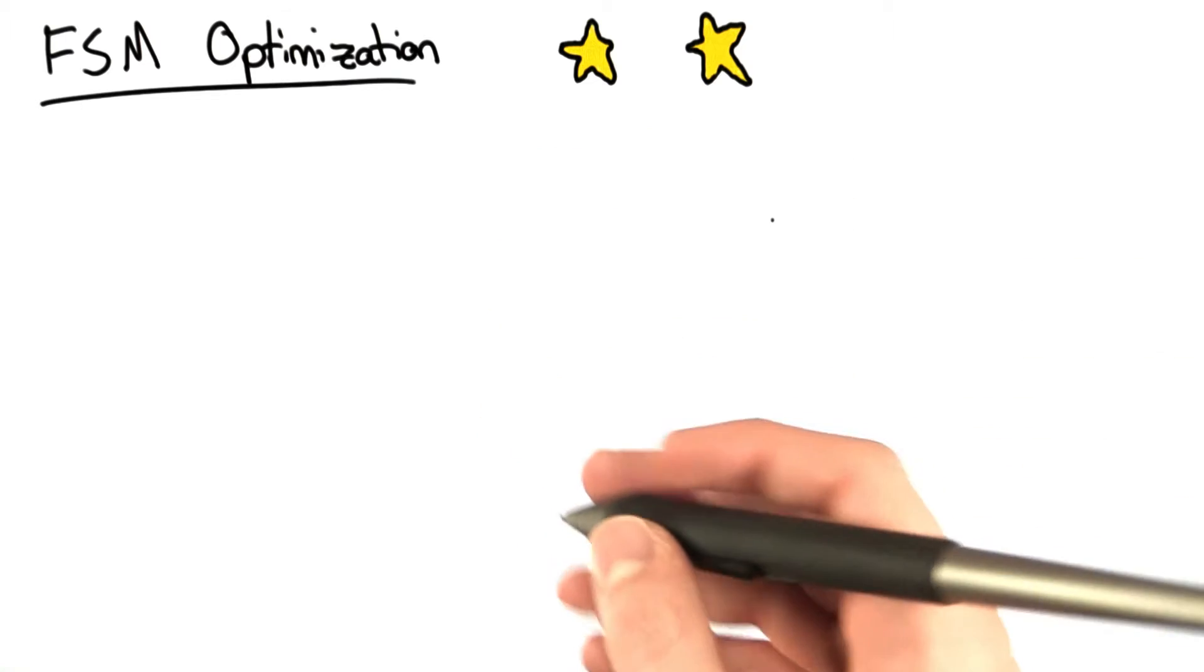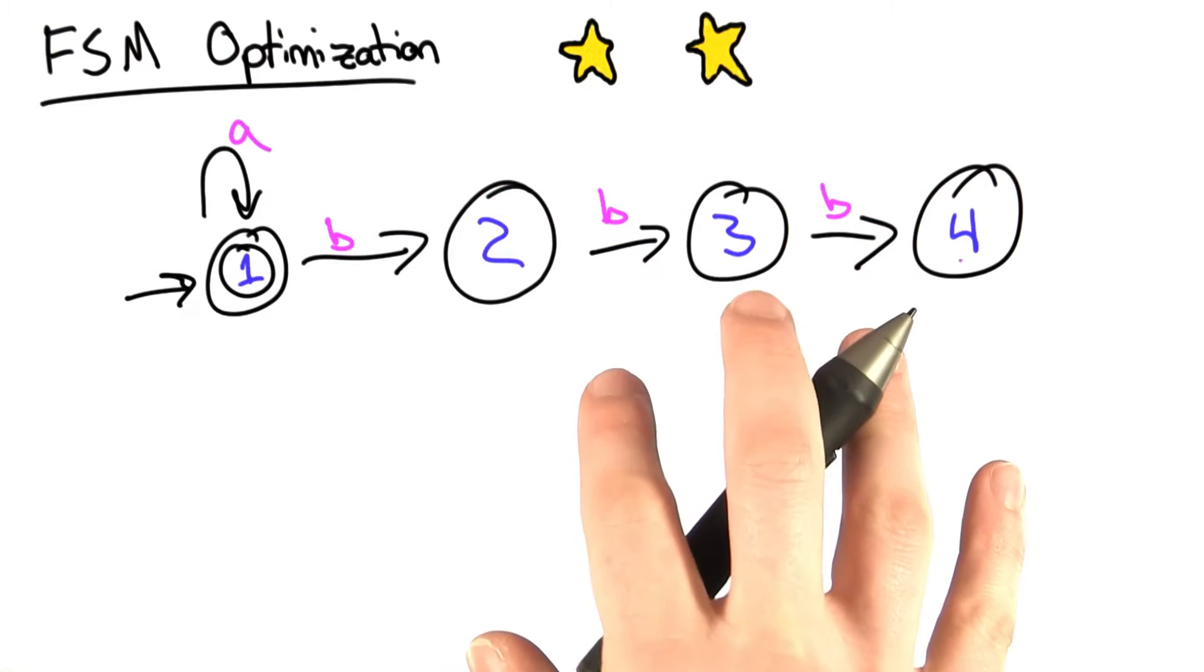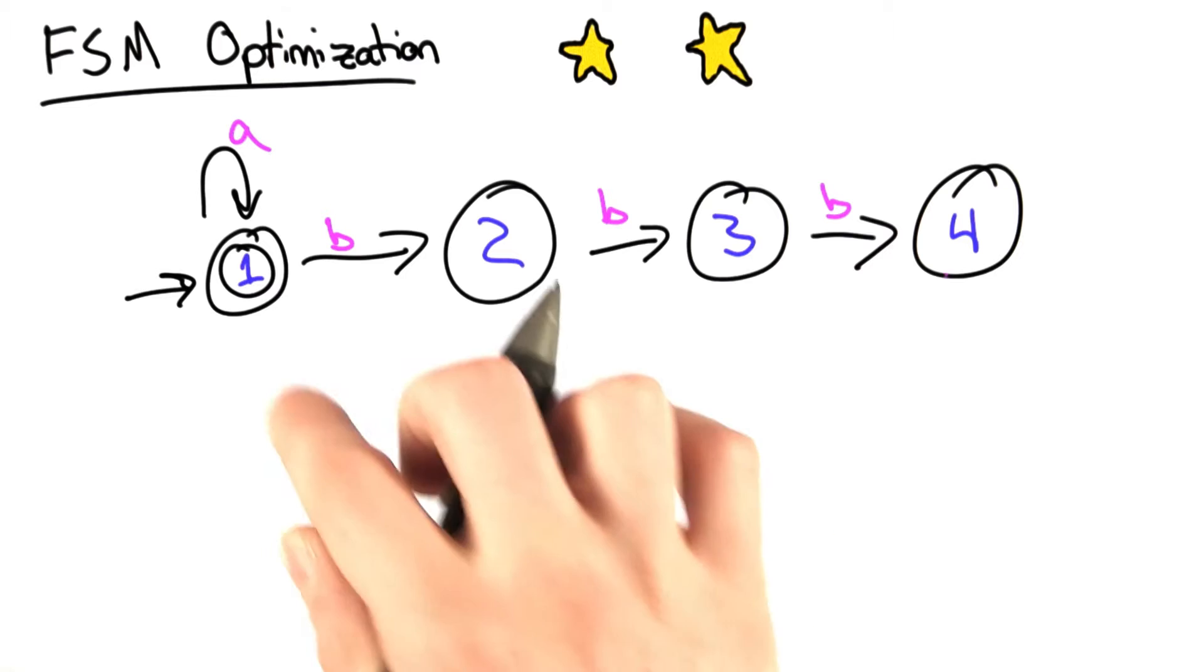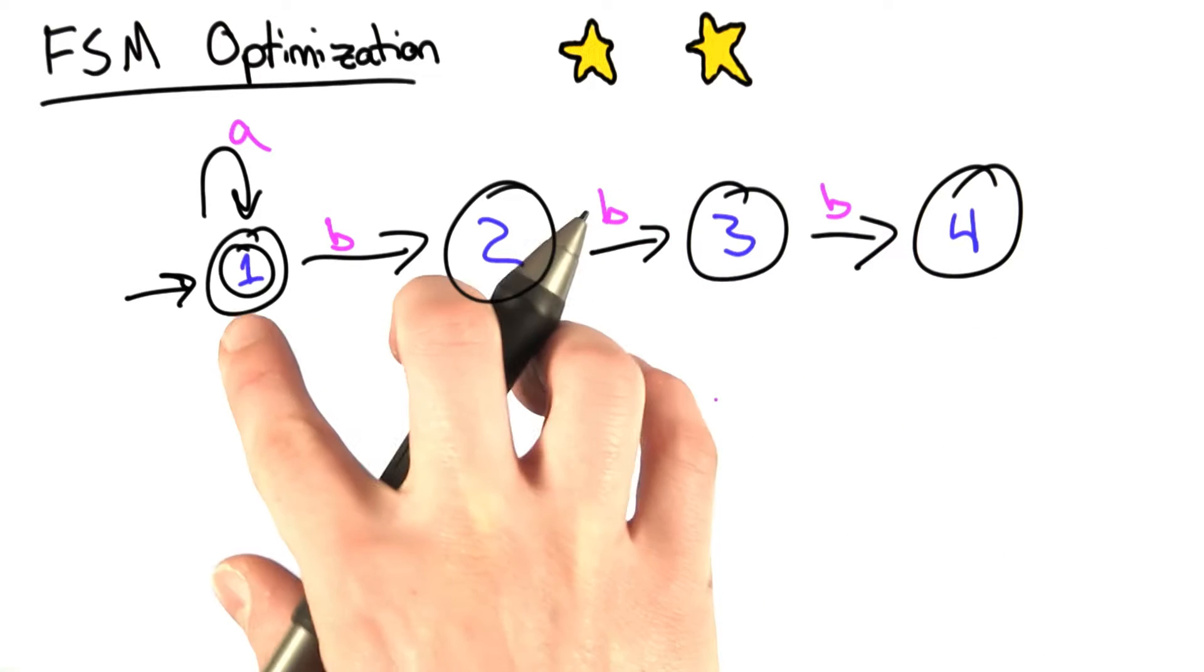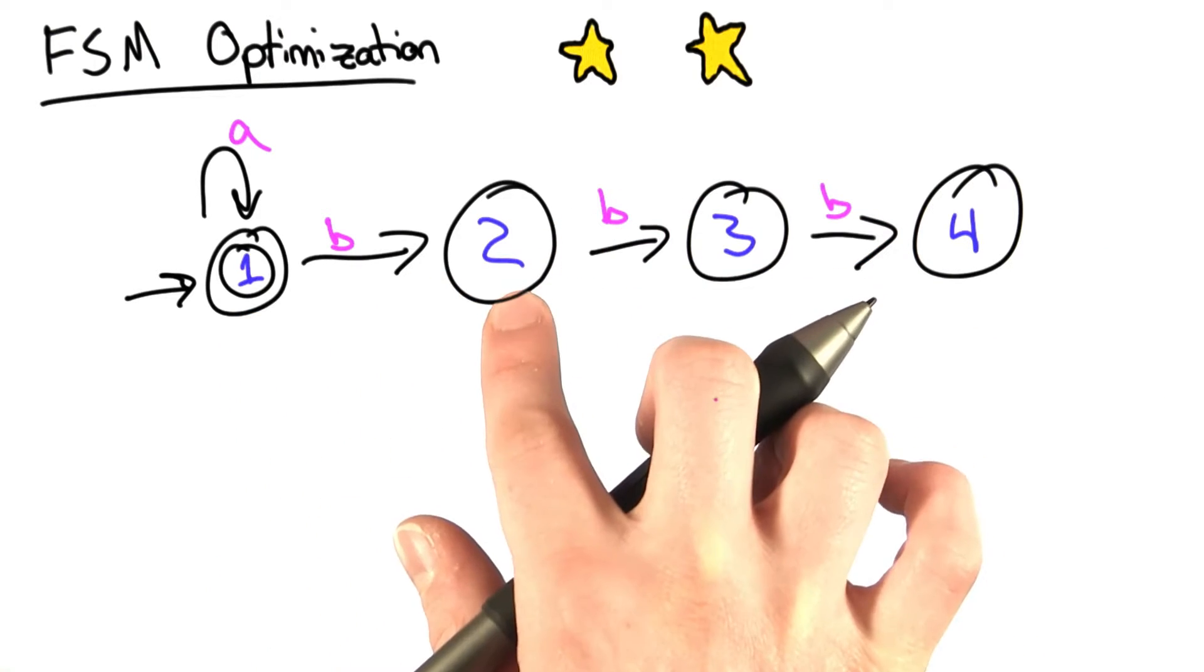So to go through an example, let's say we have this finite state machine. There's one accepting state at state 1, and we have these few others. If you quickly look at it and think about what's going on, once you take a path down the B to state 2,